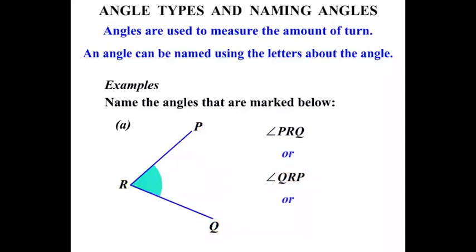Or we could actually just name it Angle R. That middle point R is known as the Vertex — the angle is at that point.